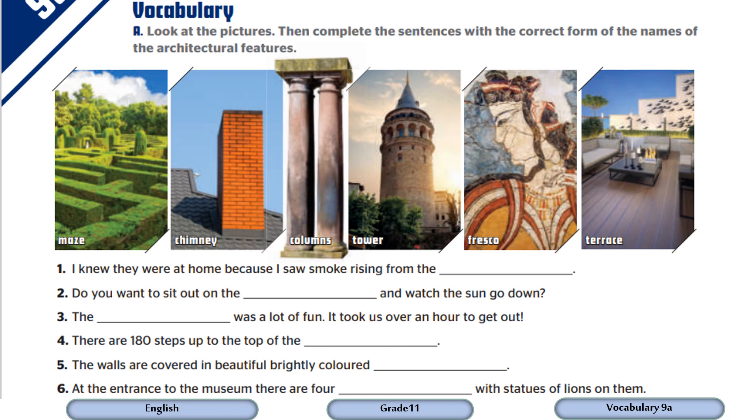Now let's read the sentences and fill in the gaps. As you can see we have six sentences. We are going to fill in the gaps with the words given. I knew they were at home because I saw smoke rising from, so the keyword here is smoke, should be rising from the chimney. Do you want to sit out on the and watch the sun go down? So where do you think we sit out? And of course we are going to watch the sun go down. Very good, it's the terrace.